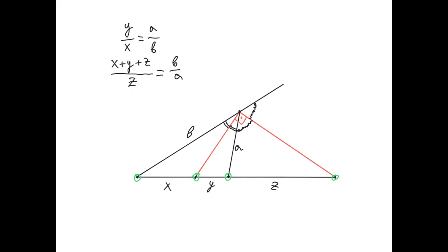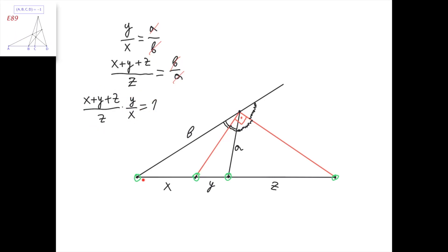Now we can take these two equalities and multiply them to cancel out A and B. When we do that, we get that (X plus Y plus Z) divided by Z times Y divided by X equals 1. Therefore, these four points are in harmonic division.